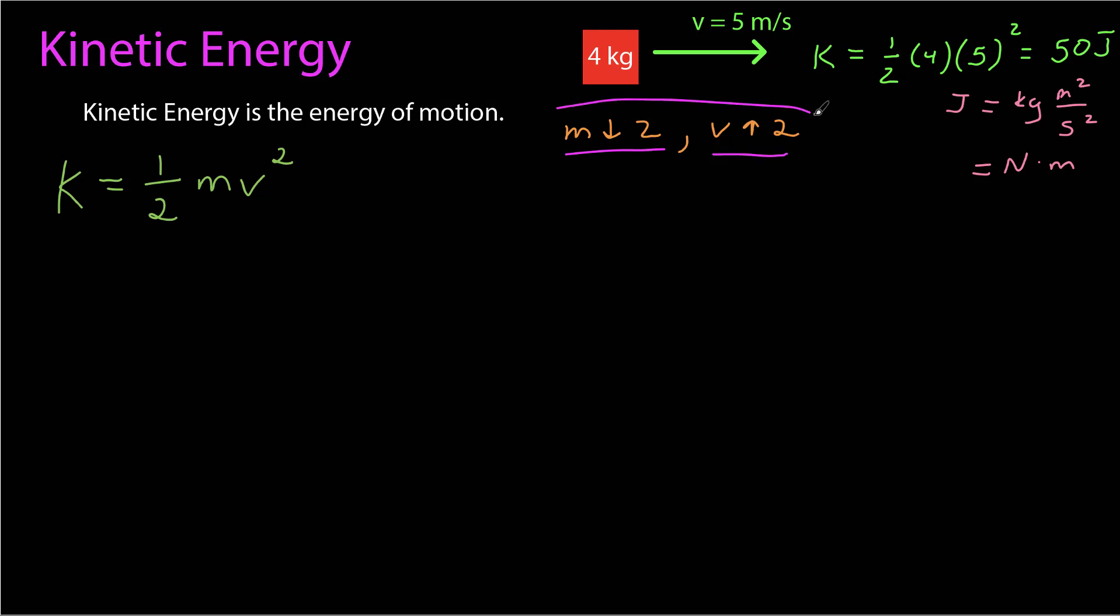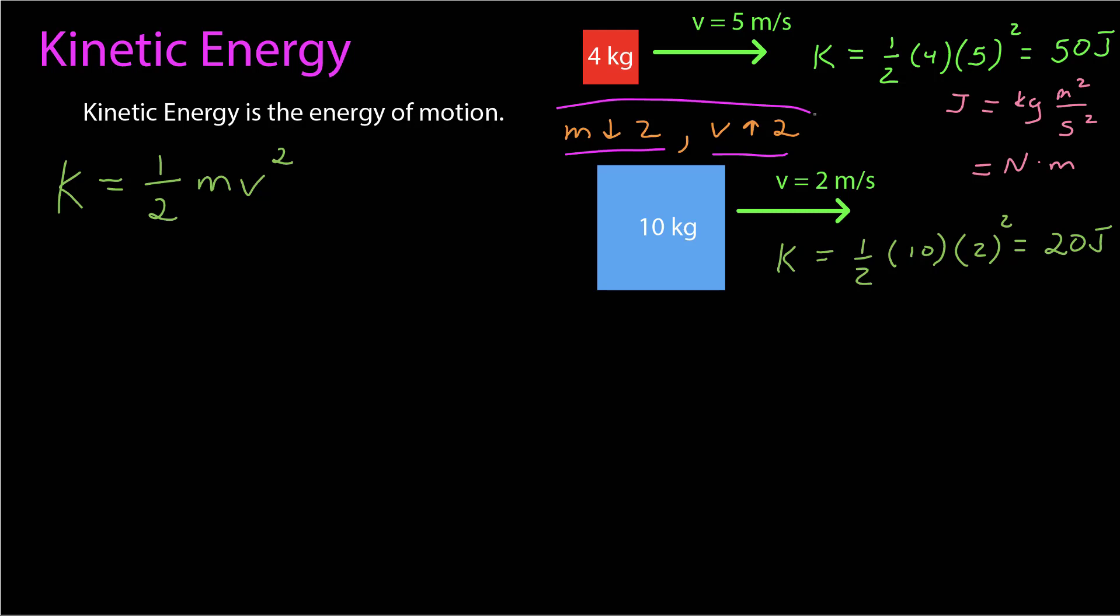If both happened, then you'd have down by a factor of 2, up by a factor of 4, up by a factor of 2. You'd go from 50 joules to 100 joules. That speed squared really does have a big effect. Here I've taken the mass up by a factor of 2.5, the speed down by a factor of 2.5, but the total kinetic energy goes down from 50 joules to 20 joules.